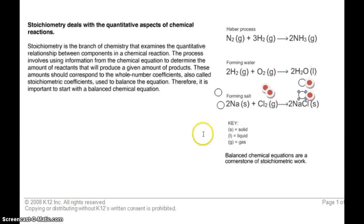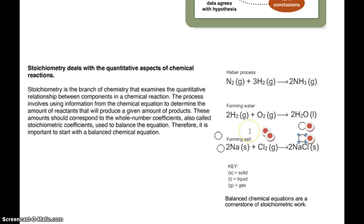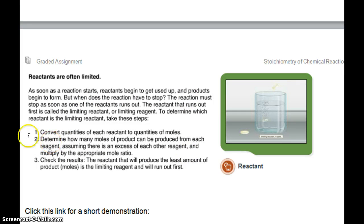Reactants are often limited. In other words, you usually don't have barrels and barrels of this stuff. You only have so much because it costs money and it takes up space to have it. So you have to have the correct amount to make the correct amount of product that you need. As soon as the reactions start, reactants begin to get used up and products begin to form. But when does the reaction have to stop? The reaction must stop as soon as one of the reactants runs out. The reactant that runs out first is called the limiting reactant or limiting reagent. To determine which reactant is the limiting reactant, take these steps. Convert quantities of each reactant to quantities of moles. Determine how many moles of product can be produced from each reagent, assuming there is an excess of each other reagent and multiply by the appropriate mole ratio. Check the results. The reactant that will produce the least amount of product in moles is the limiting reagent and will run out first.